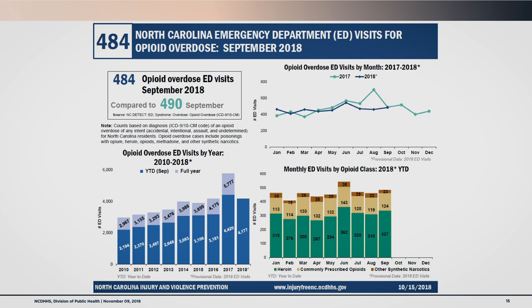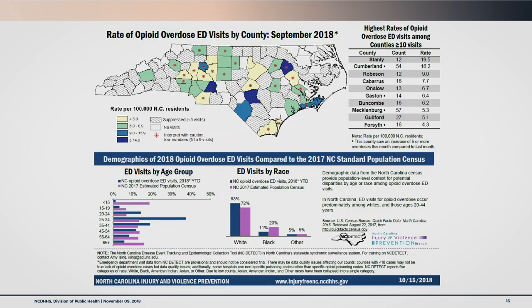North Carolina is really lucky to have very timely and accessible emergency department data. This has allowed us to develop monthly opioid overdose emergency department reports. The first page shows year-to-date trends compared to the previous year. The second page shows a monthly overview of rates of overdose emergency department visits as well as demographic information.